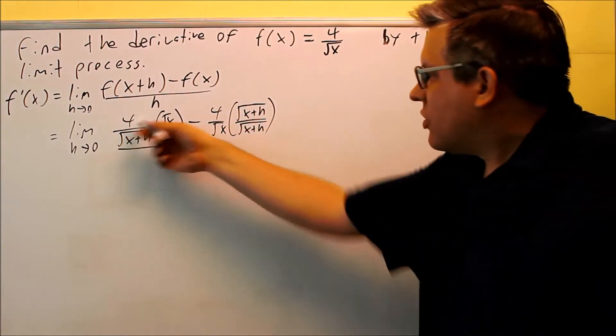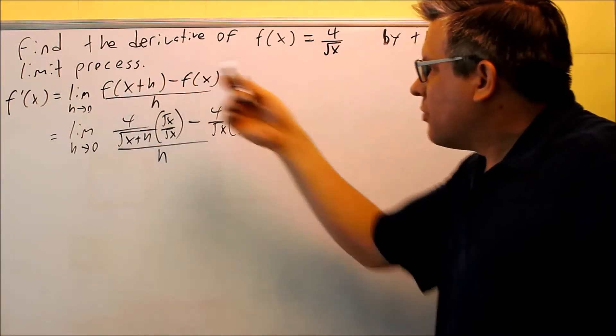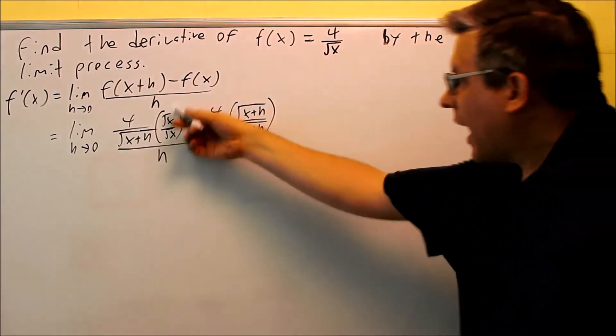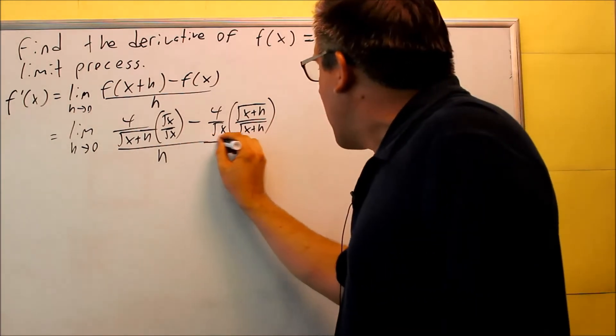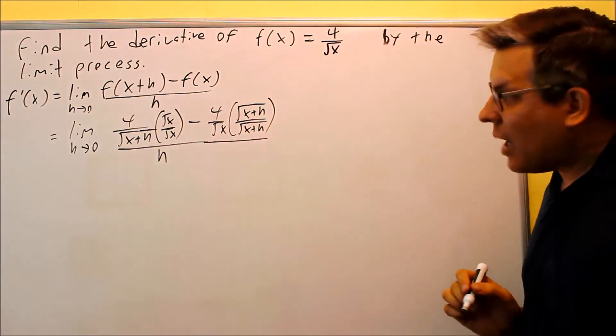So originally we had just these two. That was f(x+h) minus f(x), but now we're putting these in. We're basically multiplying each fraction by what it's missing in order to get the common denominators.